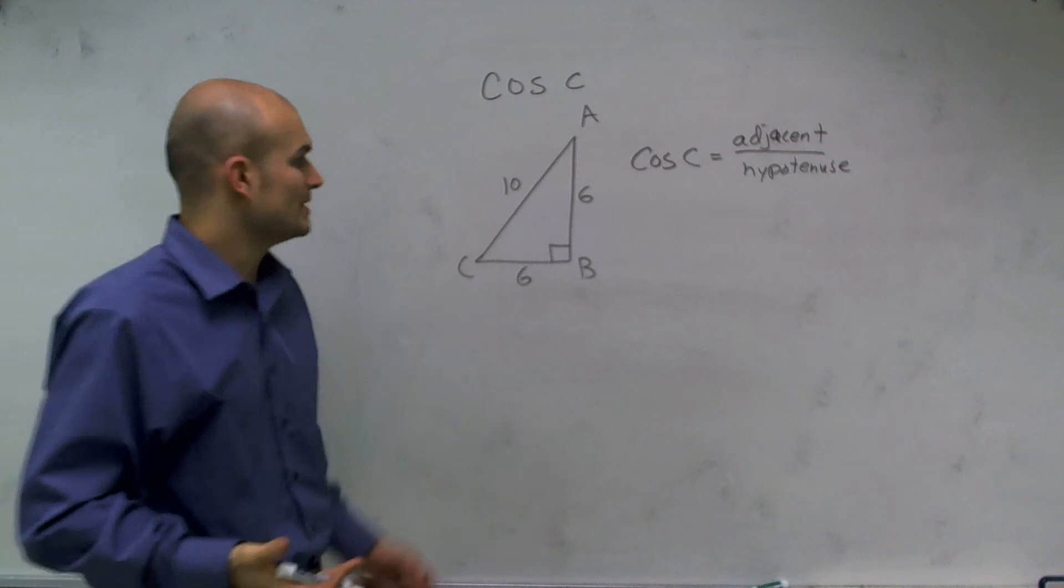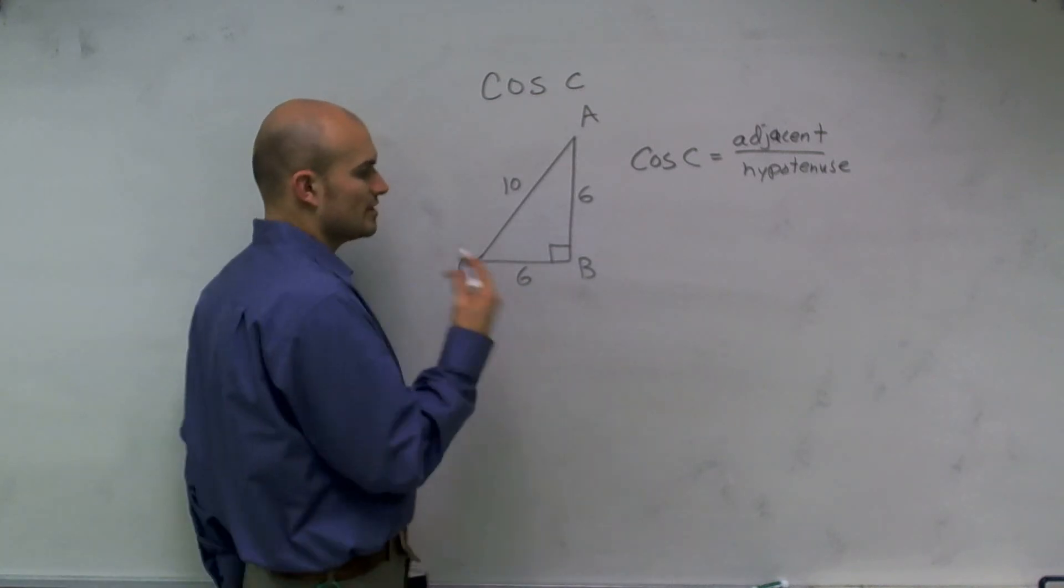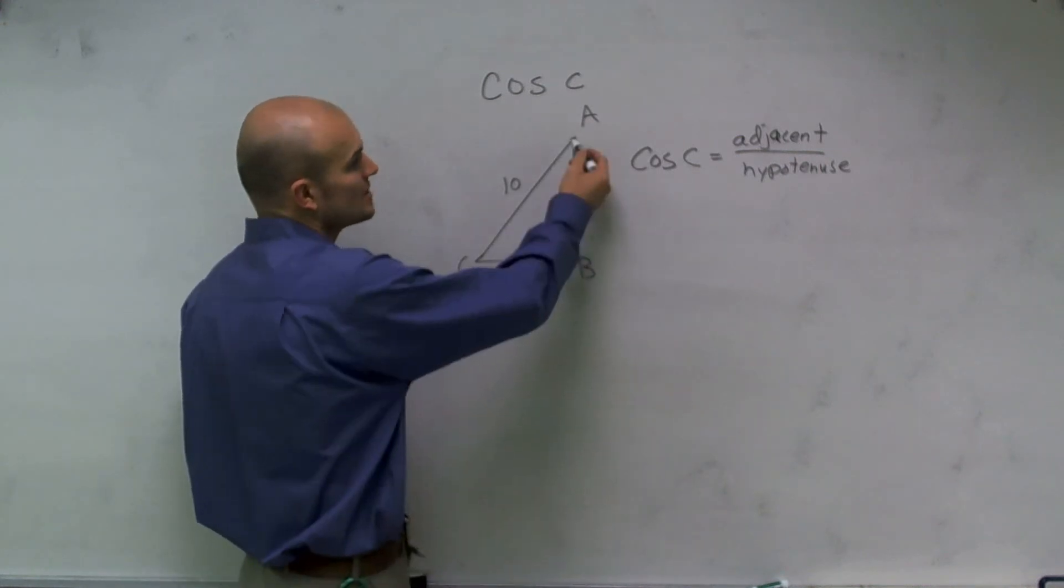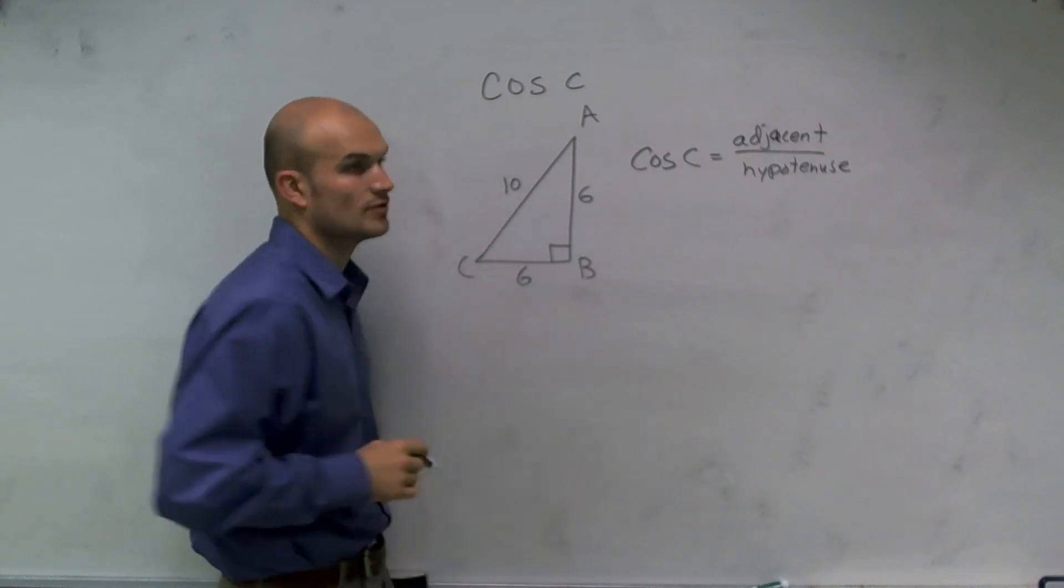Now in this triangle, we need to determine what is our adjacent side and what is our hypotenuse. Well, the first one, the easiest one to always find out is your hypotenuse because your hypotenuse is the largest leg of your triangle. It's also directly across from your 90 degree angle.